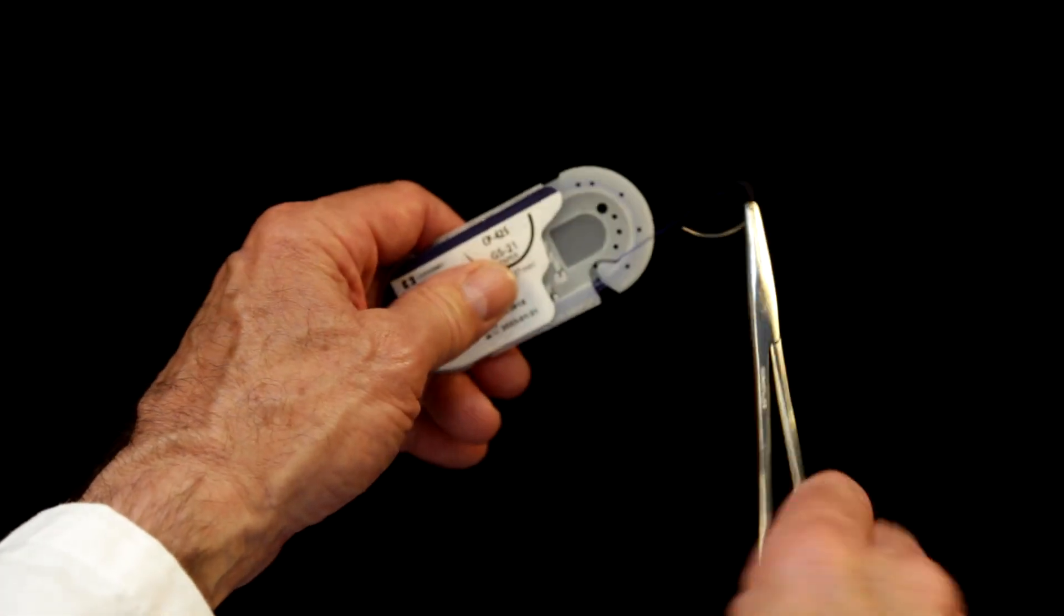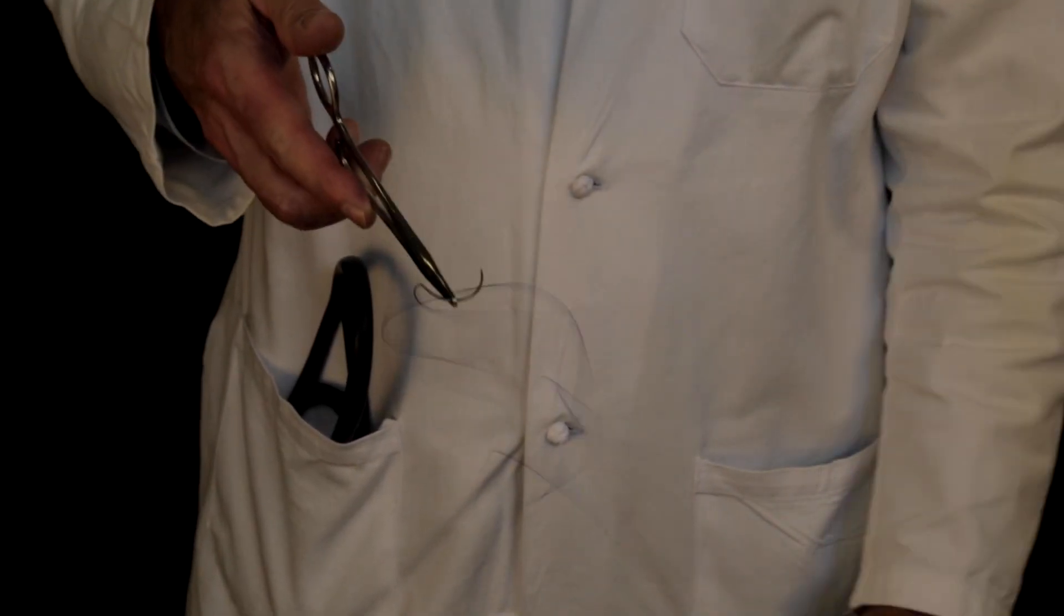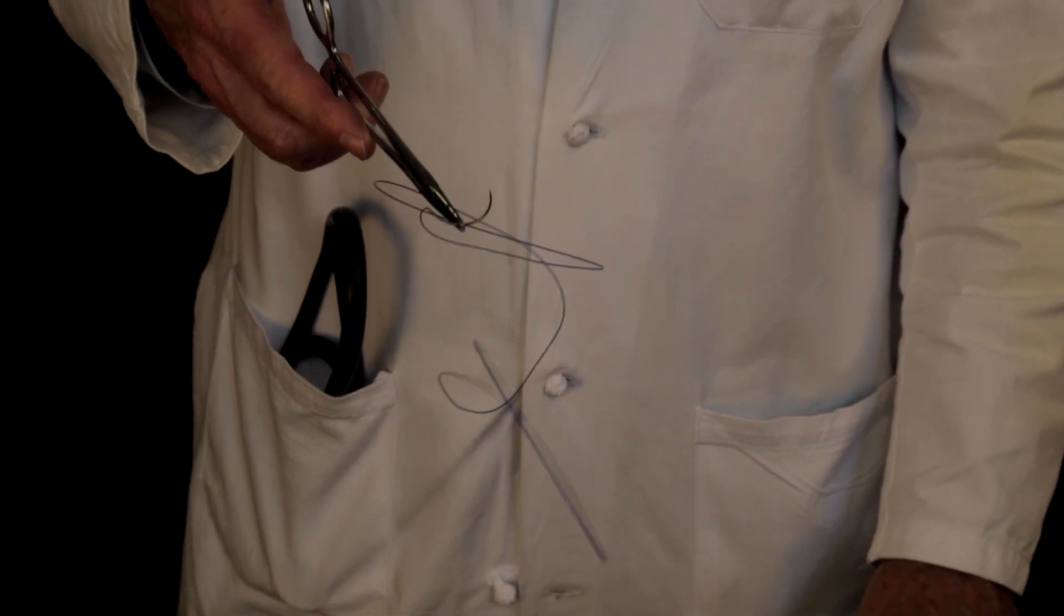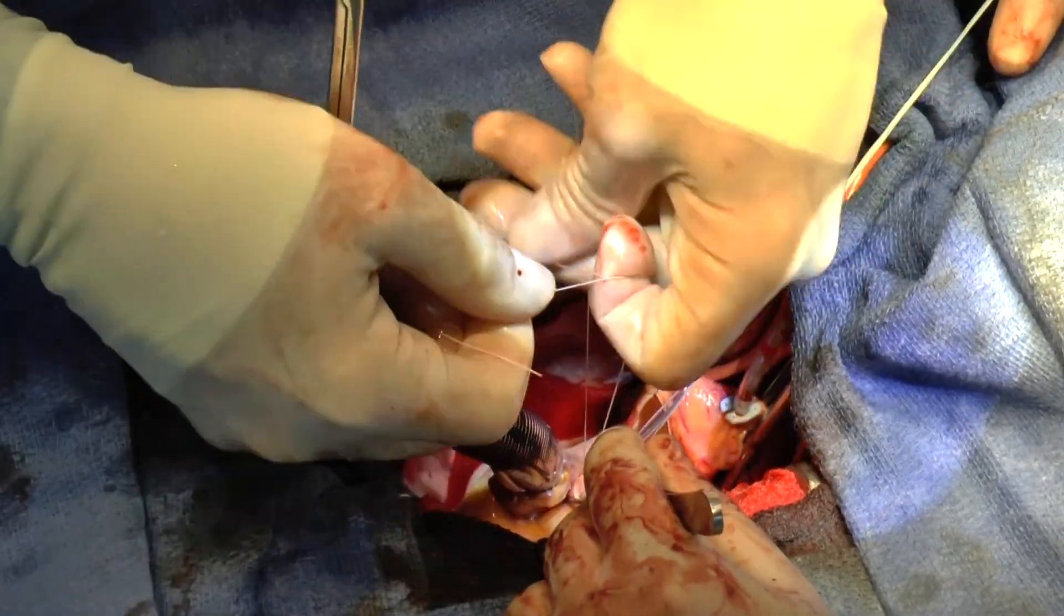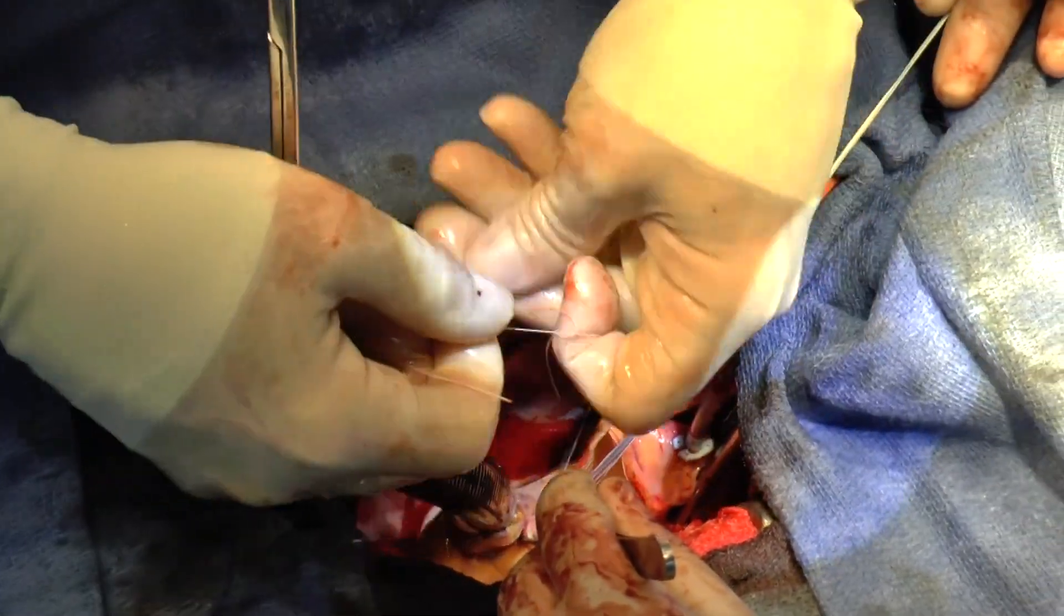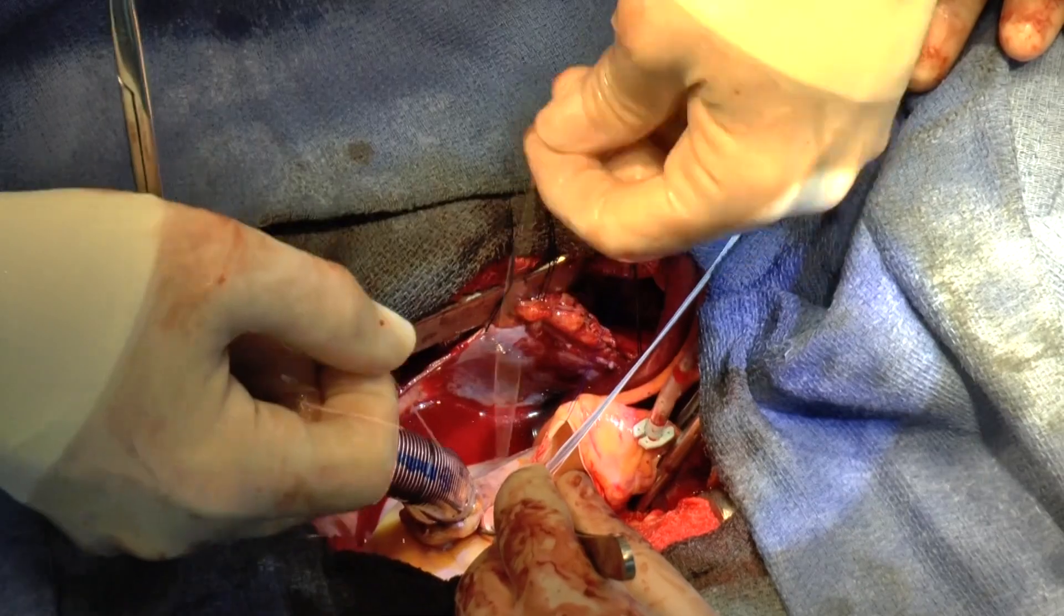In heart surgery, we're usually tying with suture material that has substantial memory and therefore a tendency to untie. So we throw several more locking loops. But virtually all of the tightening is done with the first two loops.